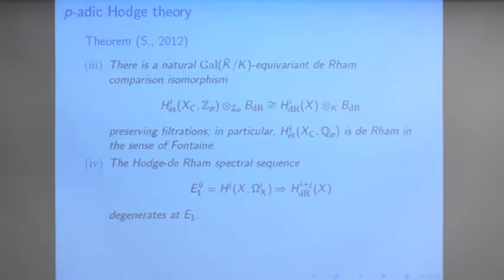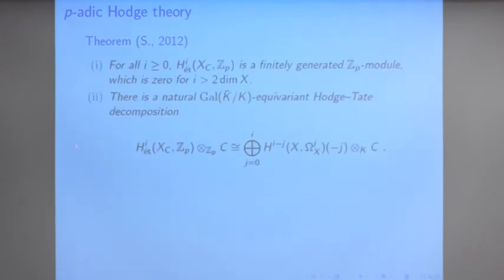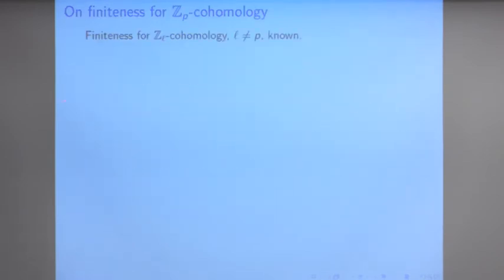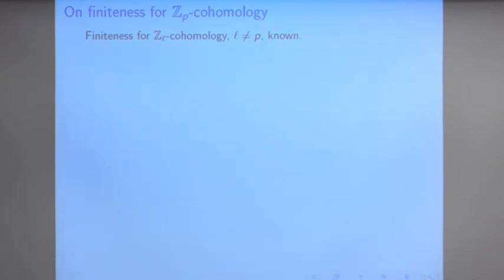What I want to do in the first two talks is sketch the proof of the finiteness of cohomology and the Hodge–Tate decomposition. The first thing I want to discuss is to what extent one can believe such a finiteness statement. One more often considers ℓ-adic cohomology for ℓ not equal to p, and this finiteness was known by work of Berkovich and Huber.